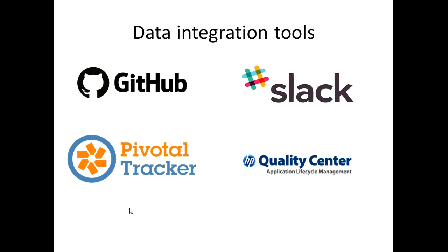Pivotal Tracker is an agile project management tool that enables real-time collaboration. I've worked with it before — it's an application where everyone on the team can go in and check on the progress of the application.